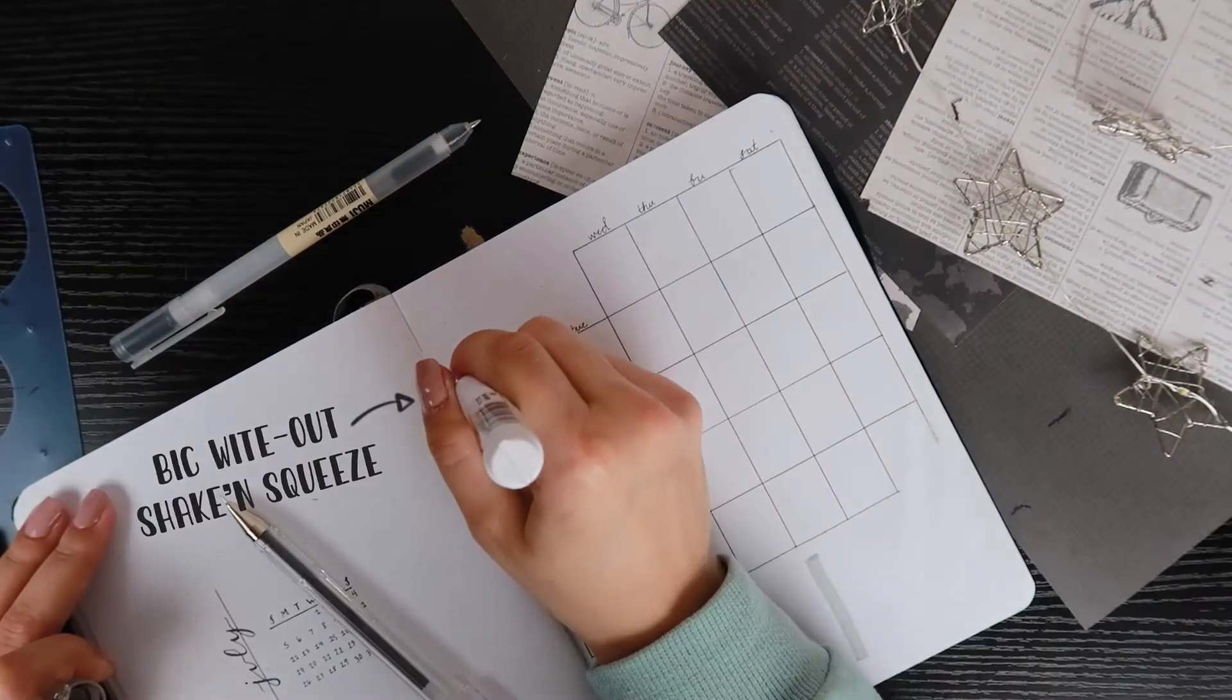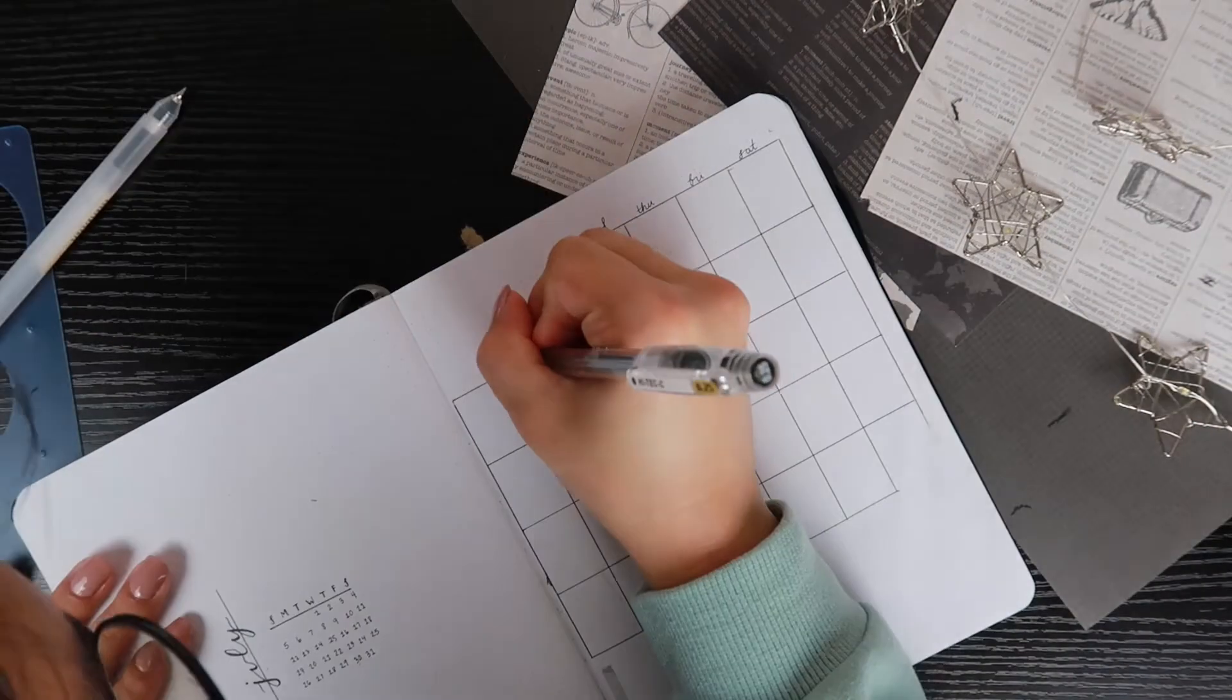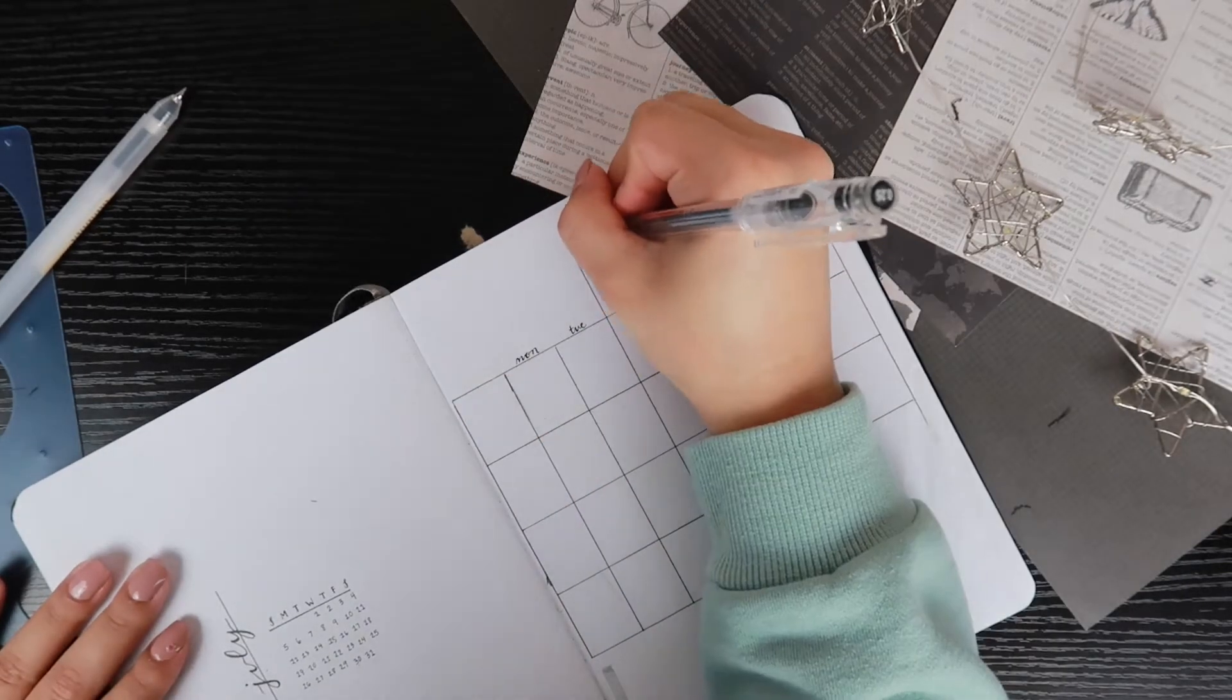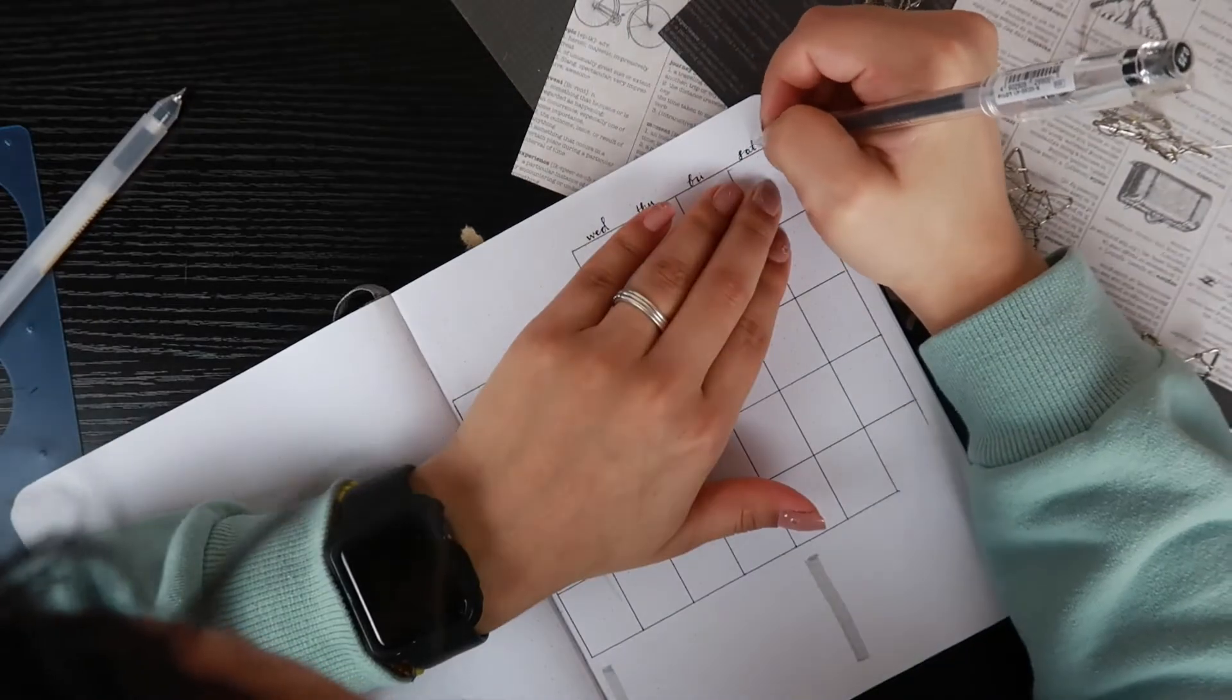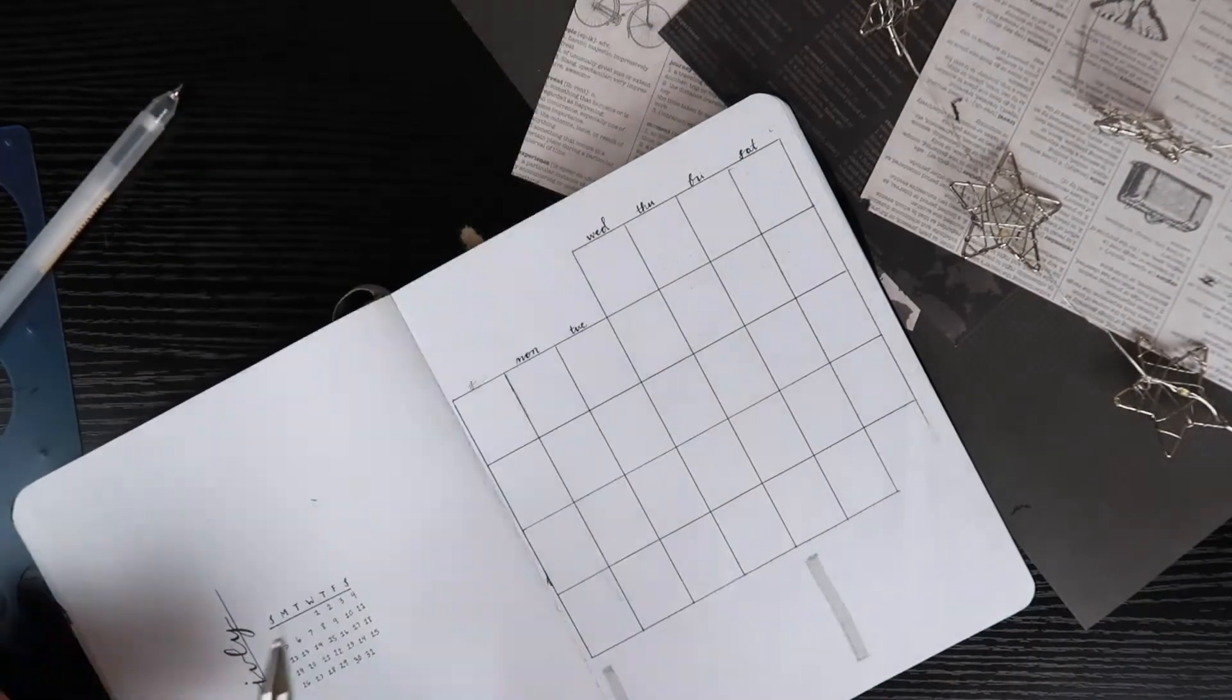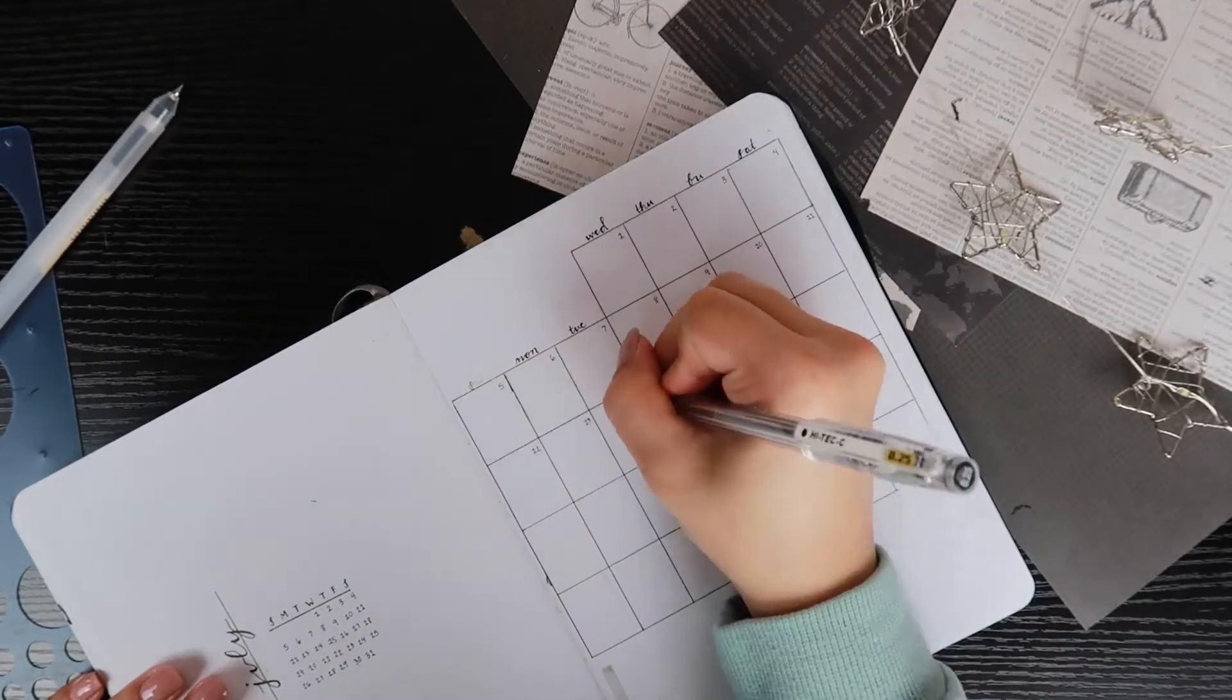Here I am using the white-out to cover up that pen mark. And then I'm going back accentuating the downstrokes to have more of a calligraphy effect. And I'm writing in the days of the week for the month.